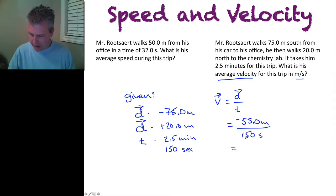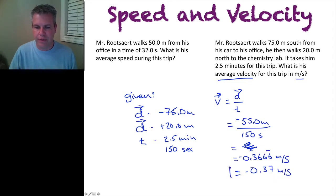Which gives me an answer of negative 0.3666 repeating meters per second. And of course, with significant digits, I had 2 here in my answer. So I'm going to round that to negative 0.37 meters per second. And that's my average velocity.